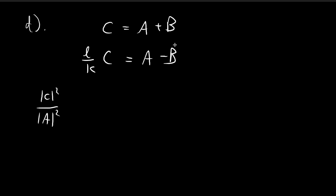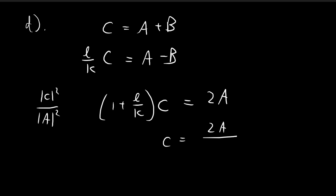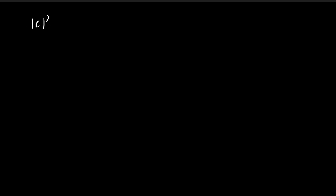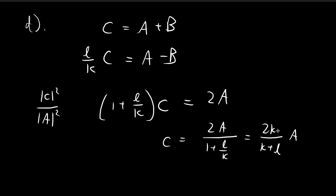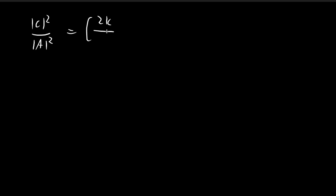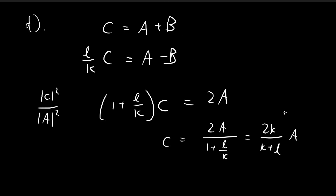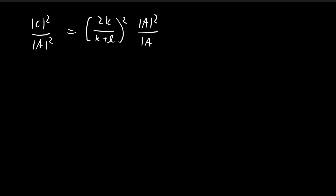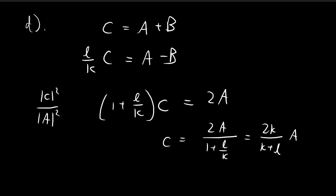Given these two continuity relationships, we can express c in terms of a by adding the two equations together. On the left-hand side you get terms involving c, and on the right-hand side you get 2a. So c equals 2a divided by (1 plus L/k), which means c equals 2k divided by (k plus L) times a. Therefore |c|²/|a|² equals (2k/(k+L))², which simplifies to 4k² divided by (k plus L)².